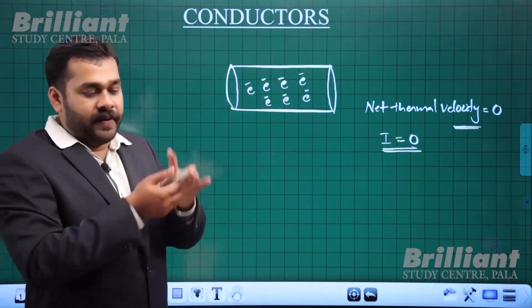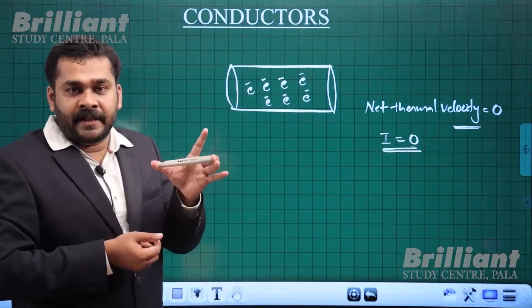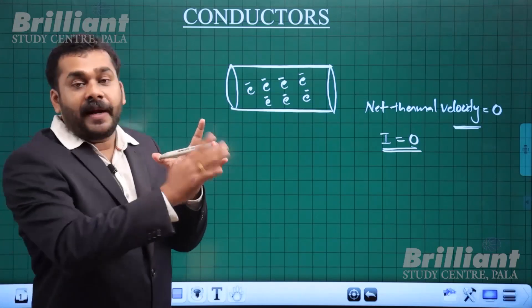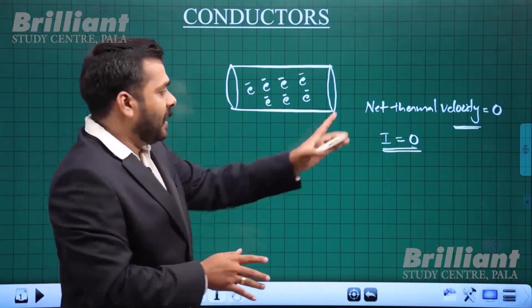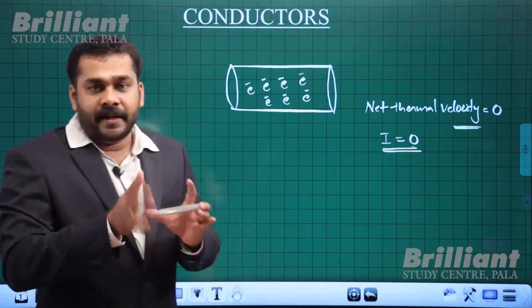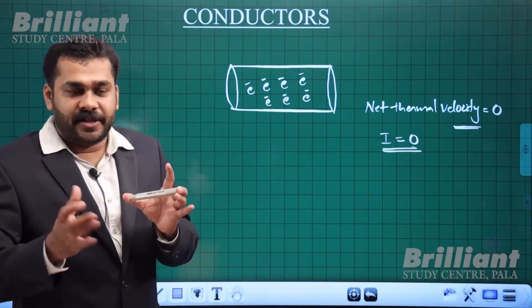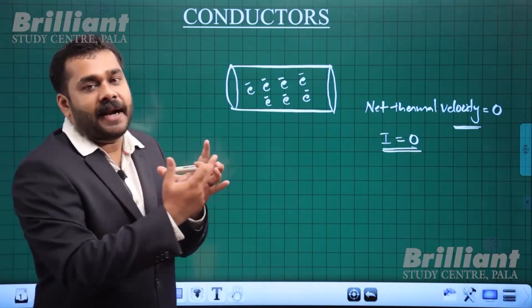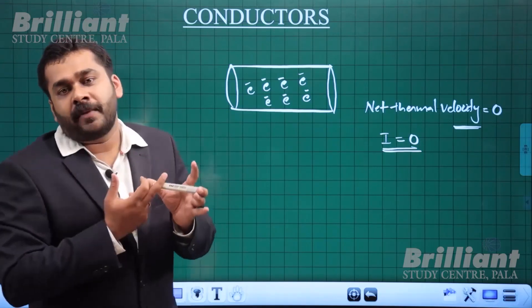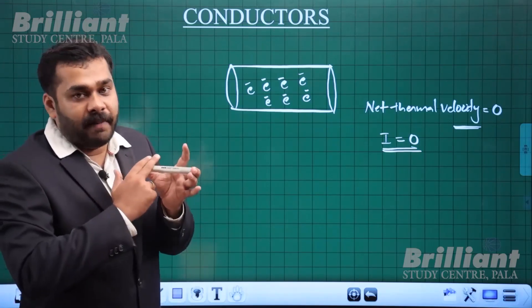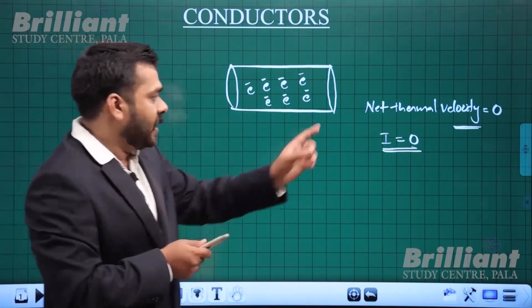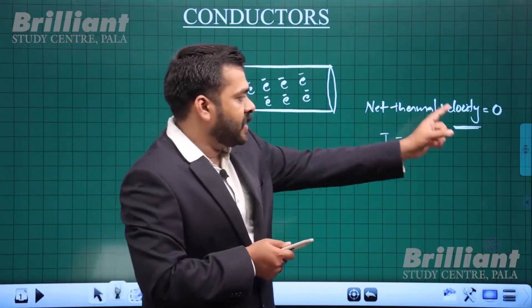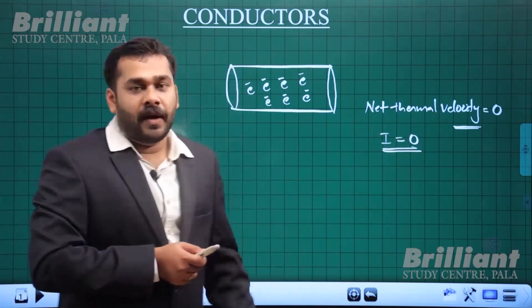The reason is that the electrons are randomly oriented and do not have a particular direction. The net thermal velocity is zero, and therefore the current is zero.